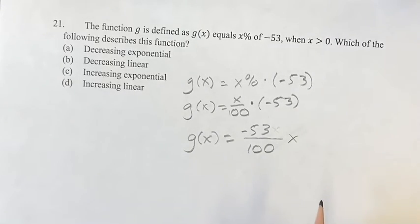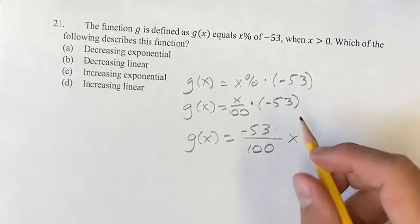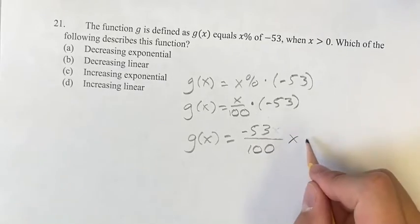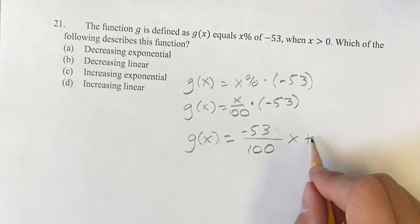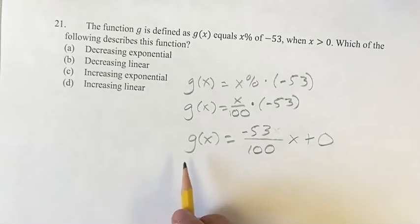So this is negative 53 over 100 times x, making it linear, plus the y-intercept which is 0. This is the y equals mx plus b form.